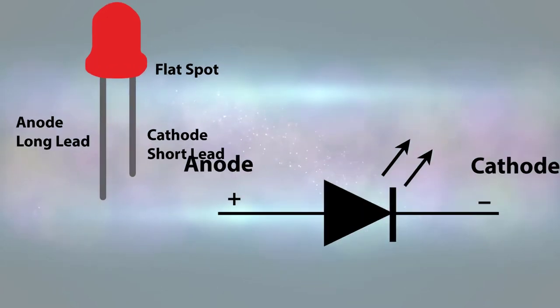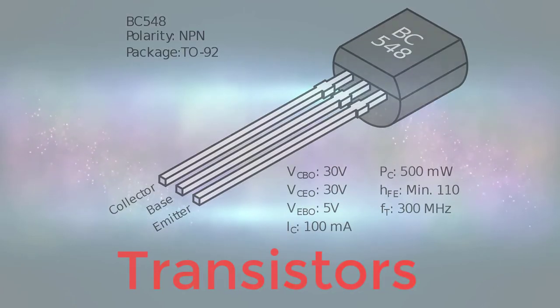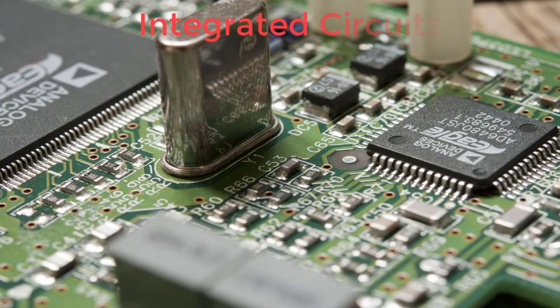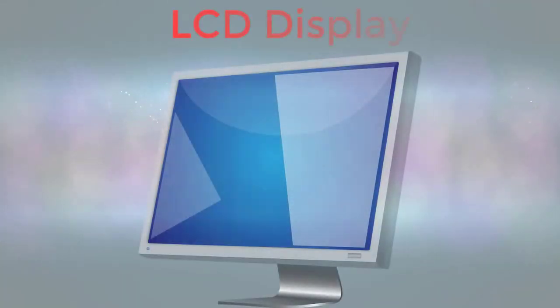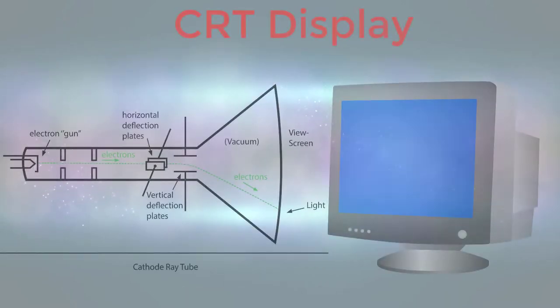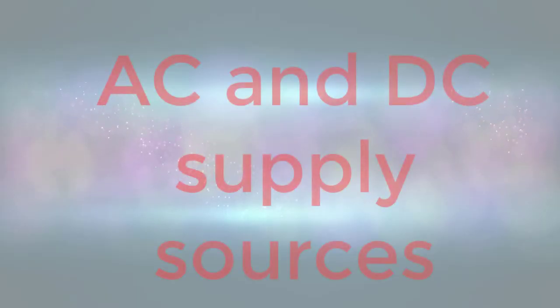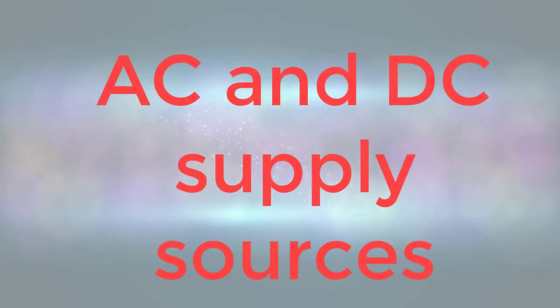Some of these components are semiconductors like diodes, transistors, integrated circuits, various displays like LCD, LED, CRTs, and power sources like batteries and other AC and DC supply sources.